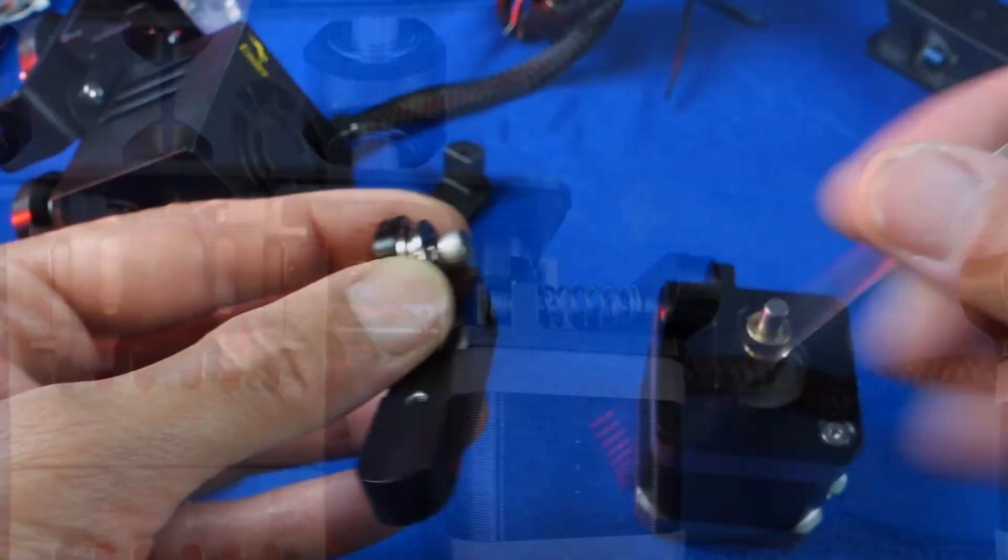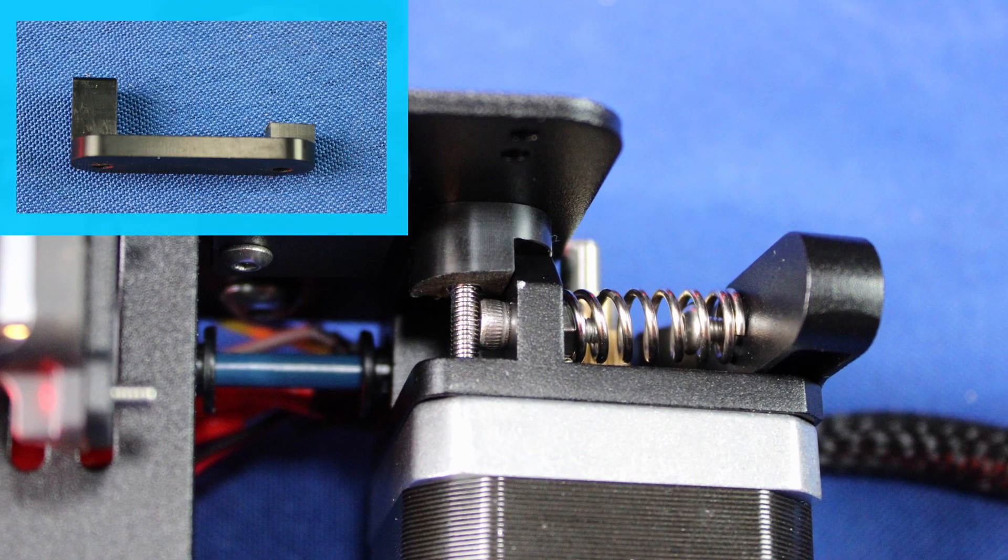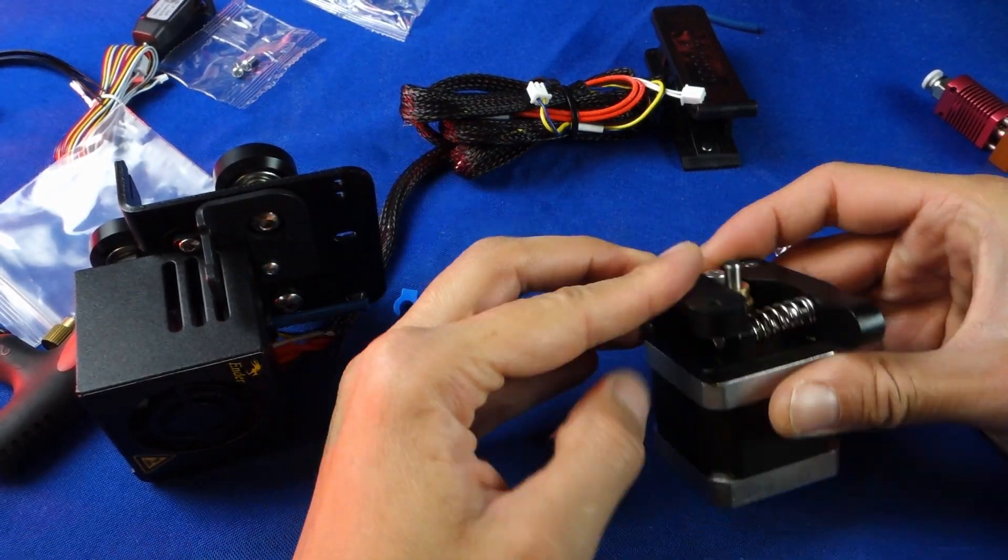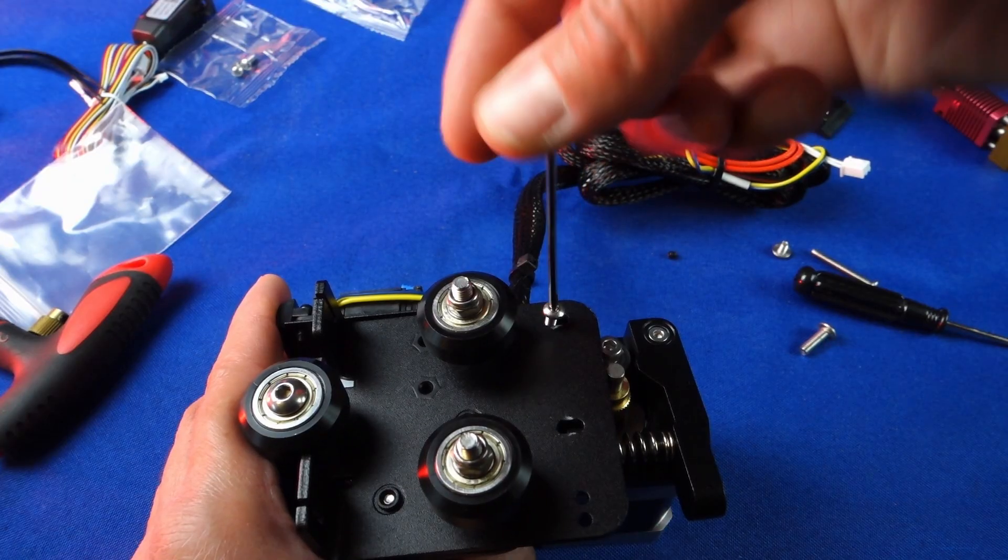Also important to note is that we will need to trim the bracket that holds the motor in place so that it does not interfere with the screw that is holding the spring. It is very important that the replacement screw head has a low profile, otherwise it will prevent the attachment screw from connecting to the motor.